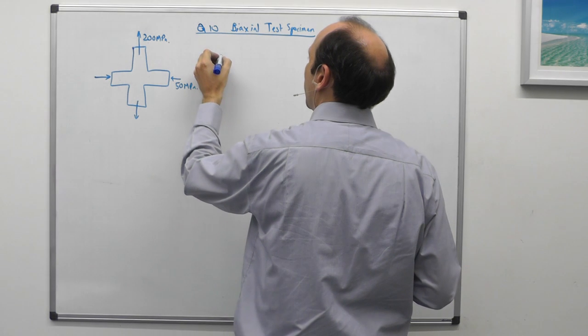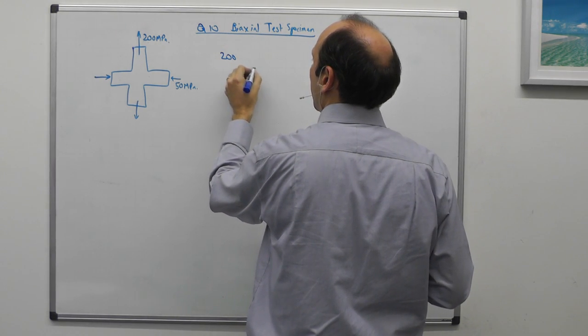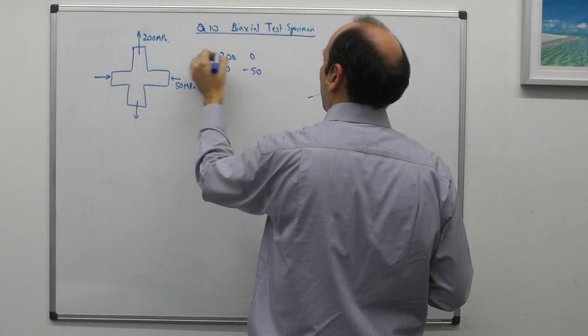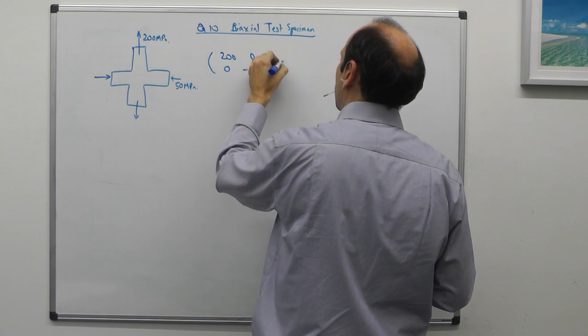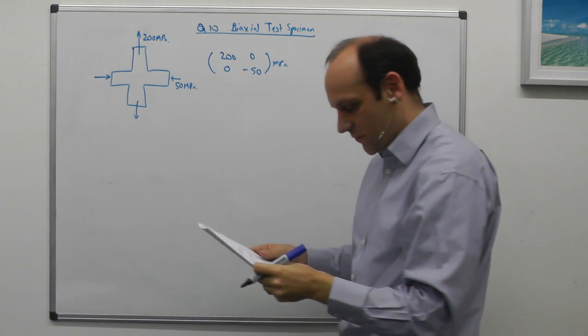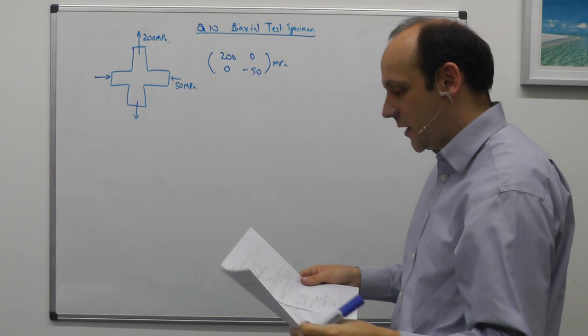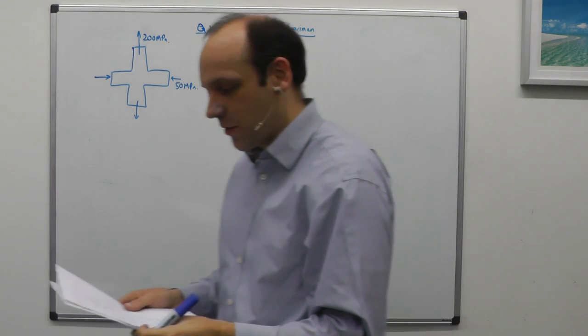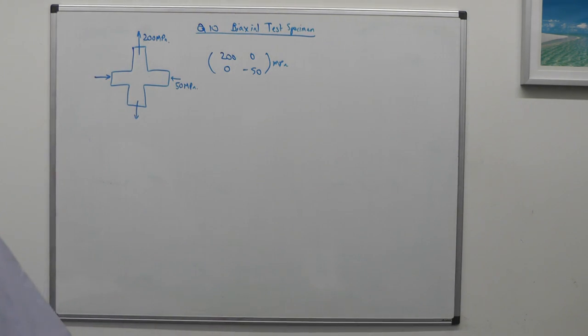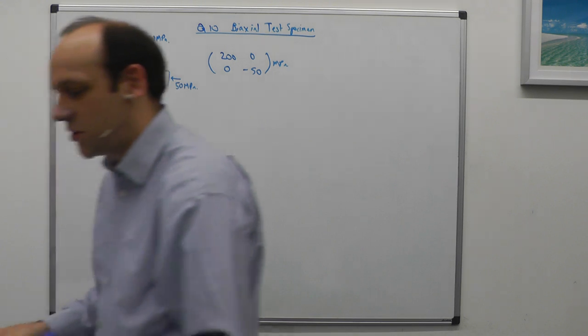We've got a stress matrix here of 200, minus 50 megapascals. The question asks us to draw a Mohr's circle and find out what the principal stresses are, find out what the maximum shear stress is.